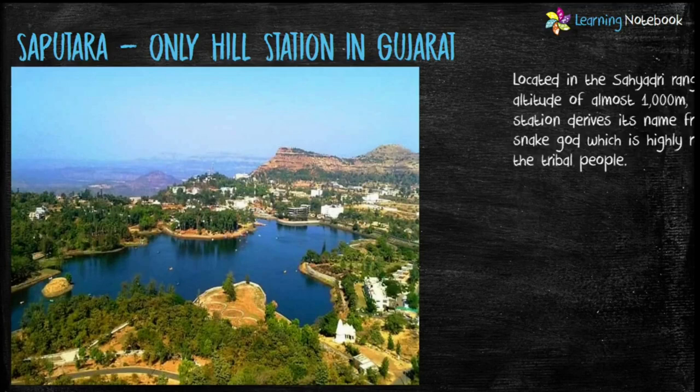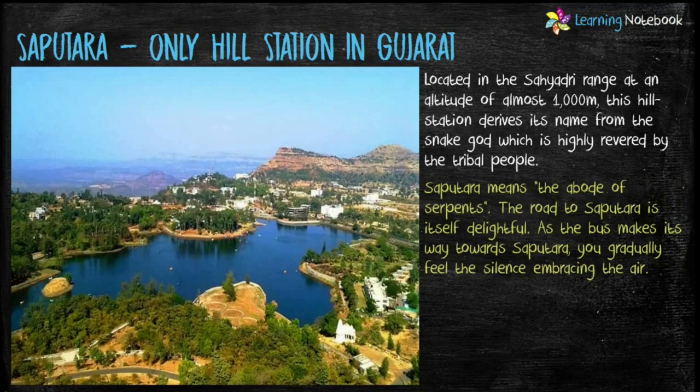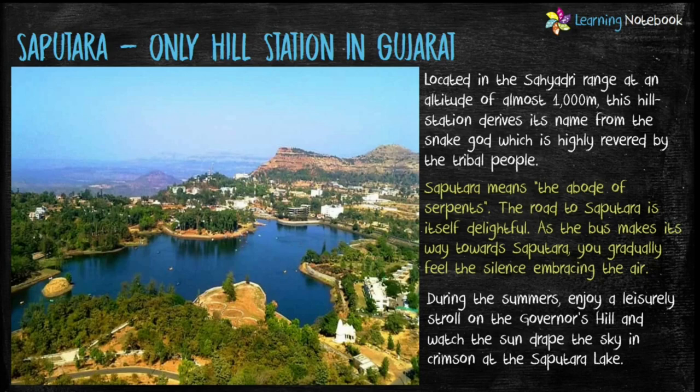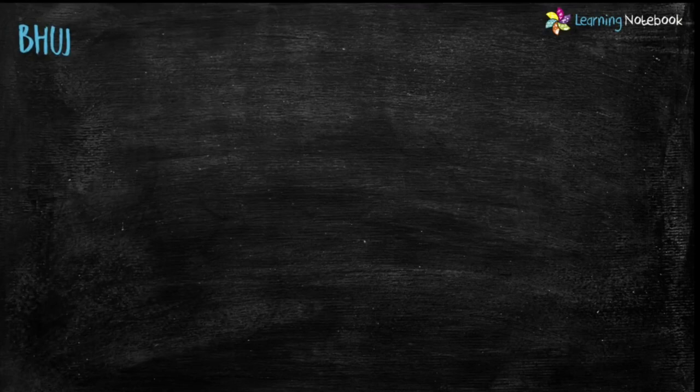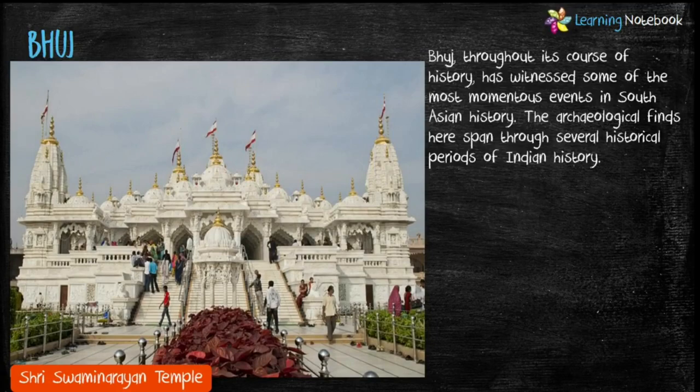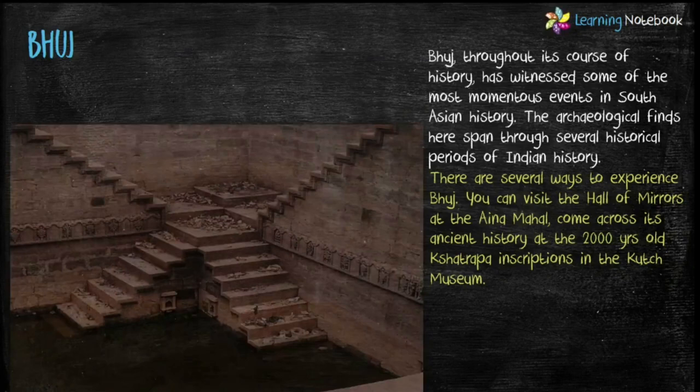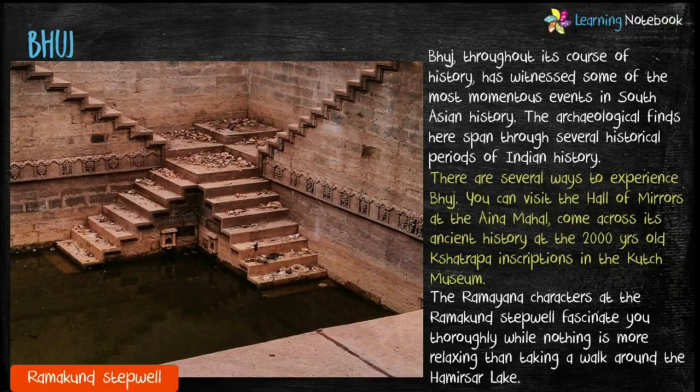The next place is Saputara, the only hill station in Gujarat. It derives its name from the snake god, which is highly revered by the tribal people. Saputara means the abode of the Serpent. Next famous place is Bhuj, which has witnessed some of the most momentous events in South Asian history. One can visit the Hall of Mirrors at the Aina Mahal and the Ramakund Stepwell.